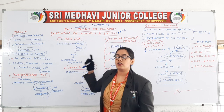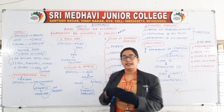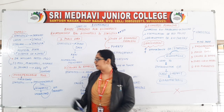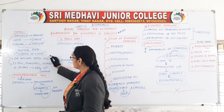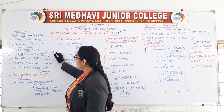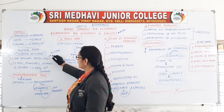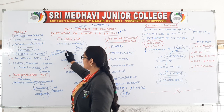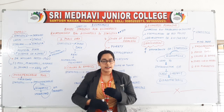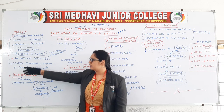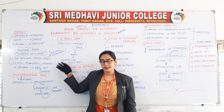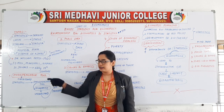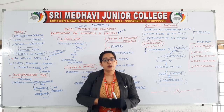The relationship between economics and statistics was first developed by Sir William Petty in his famous book 'Political Arithmetic' in the year 1960. Later on, it was developed by J.S. Mill, Marshall, J.M. Keynes, and Jevons in the early 19th century. These are all the names of economists.